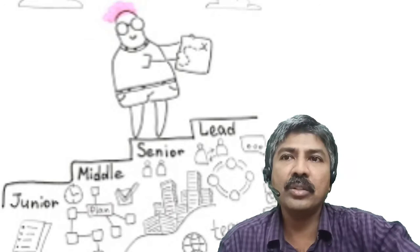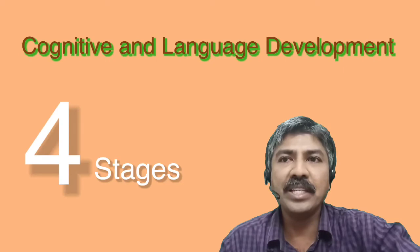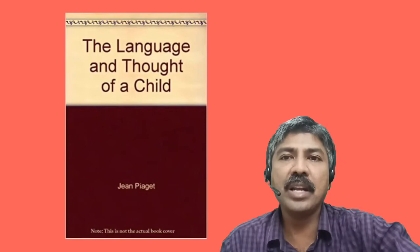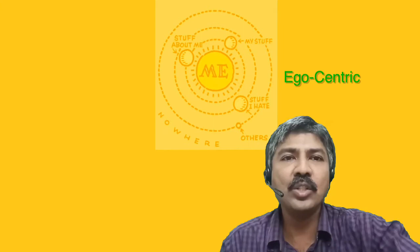Piaget's theory of cognitive and language development concerns itself with four main stages. Each of these stages is marked by changes in how children understand and experience the world around them. In his book, The Language and Thought of the Child, Piaget describes two functions of children's language: one is egocentric, the other is socialized.